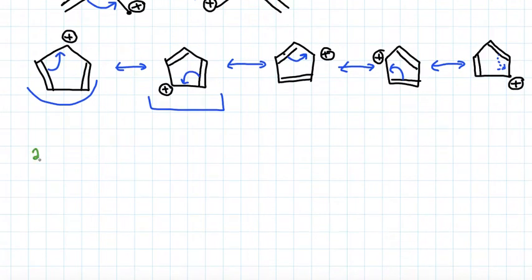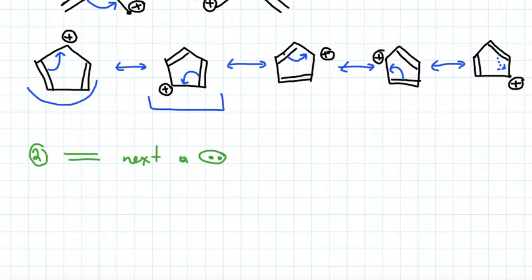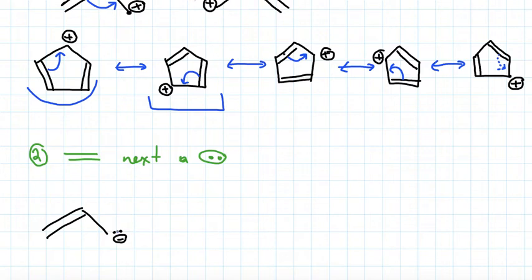That was pattern number one. Now let's look at pattern number two, which is a double bond next to a lone pair of electrons. The lone pair can be neutral on an atom or sometimes carry a negative charge. If we see a lone pair next to a double bond, we know the lone pair represents extra electrons that can be moved.